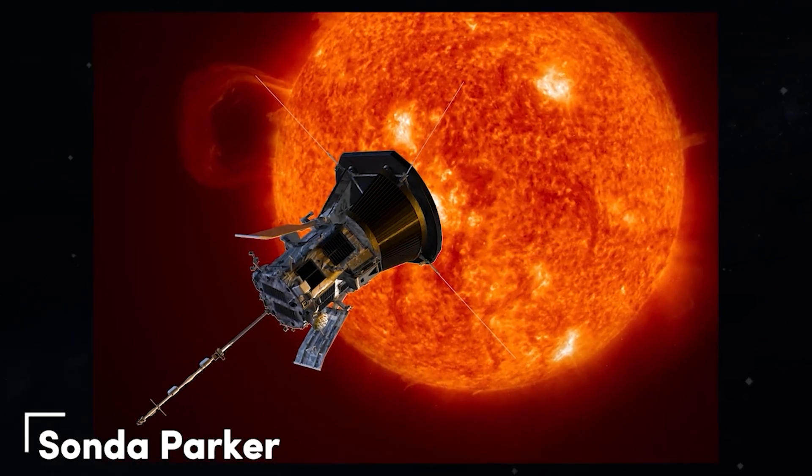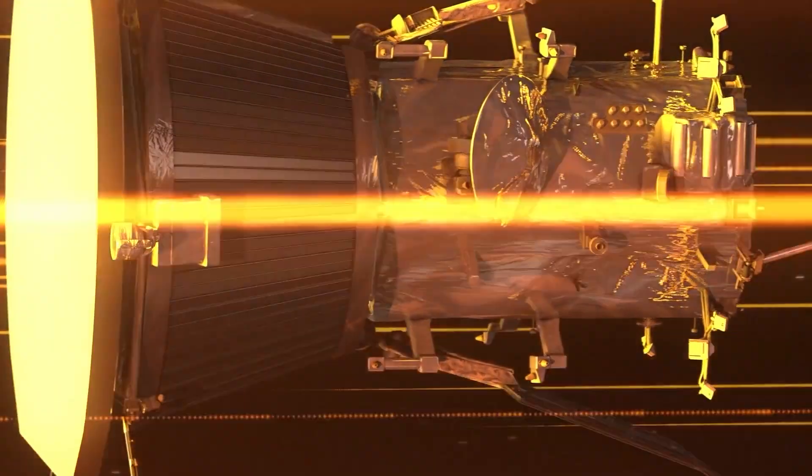The Parker Solar Probe, which is currently in orbit, is the fastest spacecraft, reaching a top speed of 450,000 meters per hour.